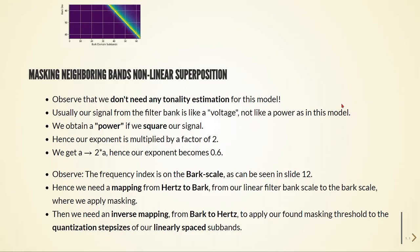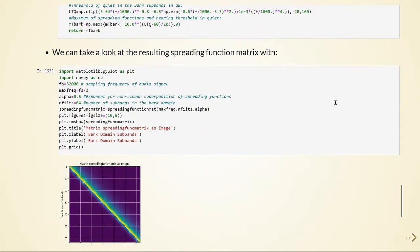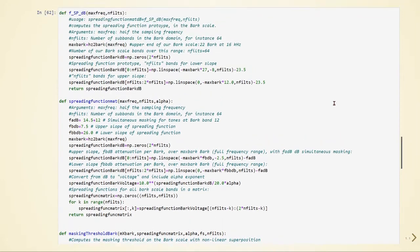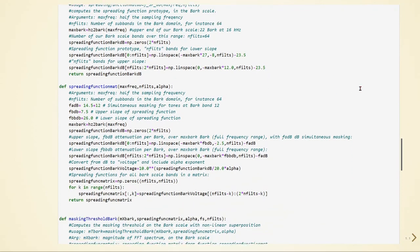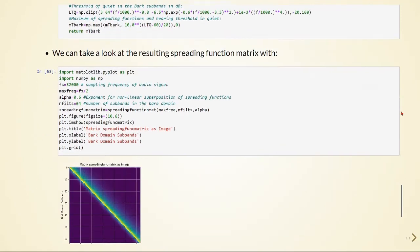Observe that the frequency index is on the Bark scale. We need a mapping from Hertz to Bark, from our linear filter bank scale to the Bark scale where we apply masking. Then we will also need later an inverse mapping from Bark to Hertz to apply our found masking threshold to the quantization step sizes of our linearly spaced subbands. So keep in mind that we'll go back and forth from Bark domain to linear domain, Hertz to Bark, and converting things to Bark domain and from Bark domain.